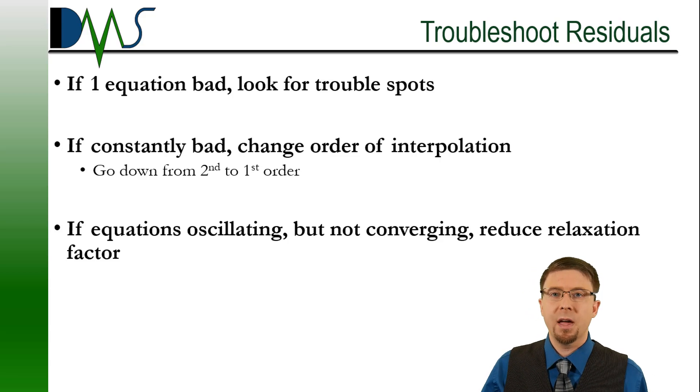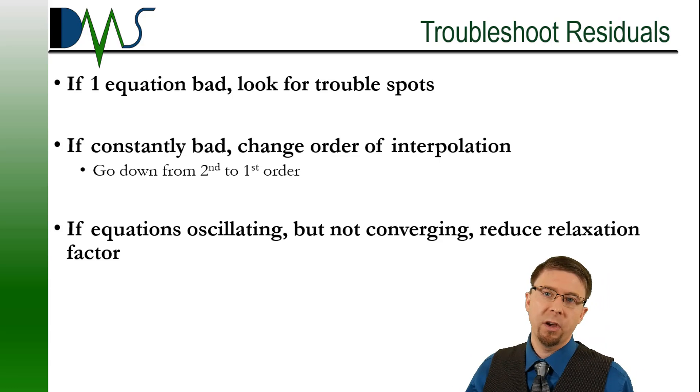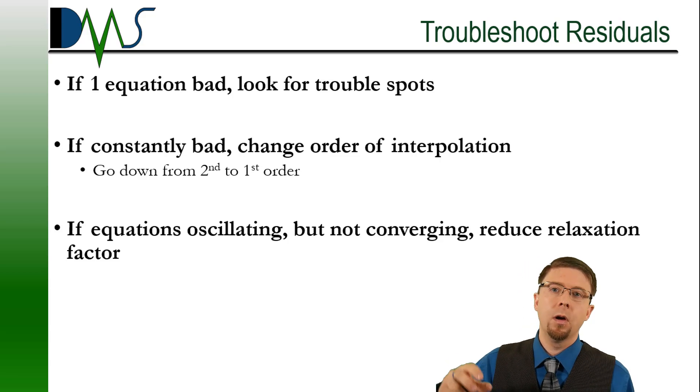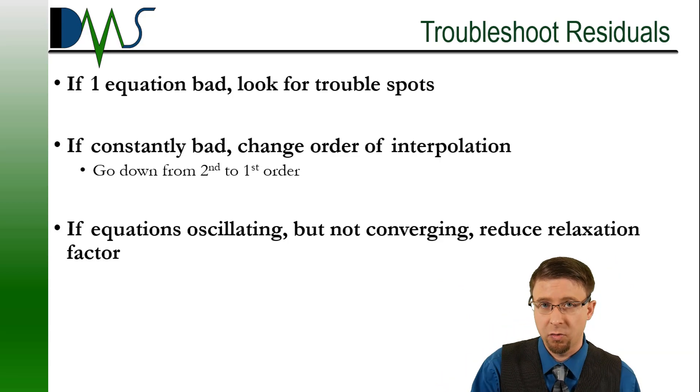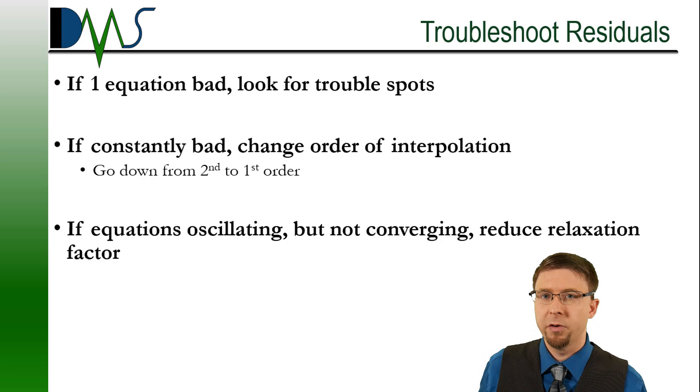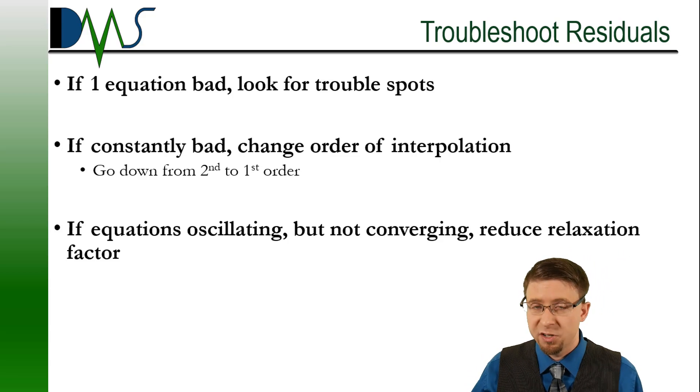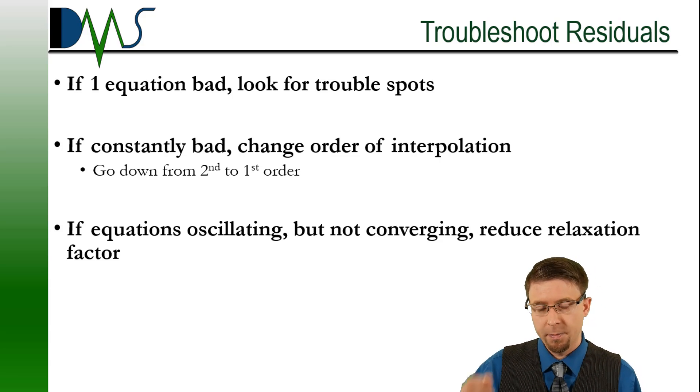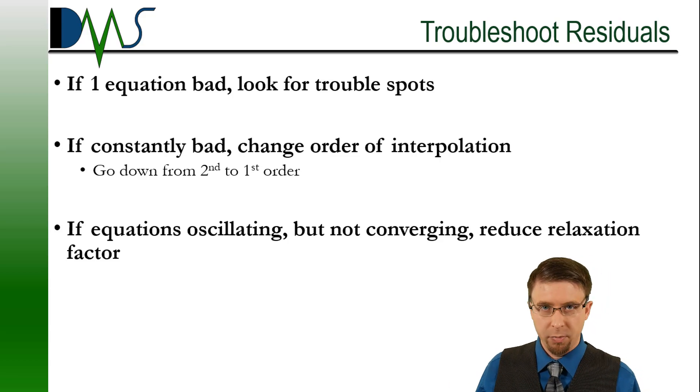Next problem, if you have a constantly bad set of residuals where a whole set of them, like all of your momentum equations or all of your volume fraction equations are giving you trouble, all of them where they start trending down but then curve upwards and eventually trend towards infinity, then you want to try changing your order of interpolation. Try going from second order down to first order. Now, you may not want to do that for reasons of accuracy. For example, if you're talking momentum equations, I would never recommend changing from second order down to first order for your momentum. That's too large of a sacrifice for accuracy. However, you may want to do it just for debugging purposes.